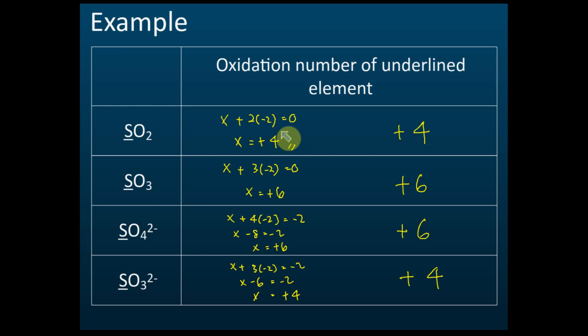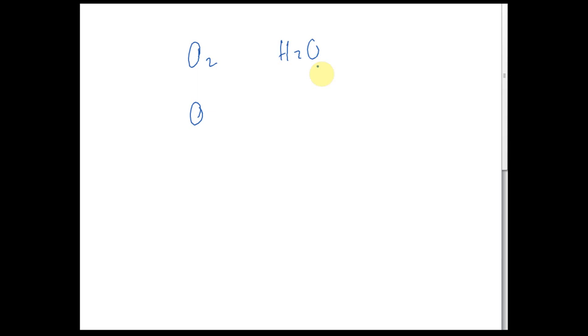Oxygen can have 3 oxidation states. For example: O2 — the oxidation state is 0. H2O — the oxidation state is negative 2. H2O2 — the oxidation state is negative 1.